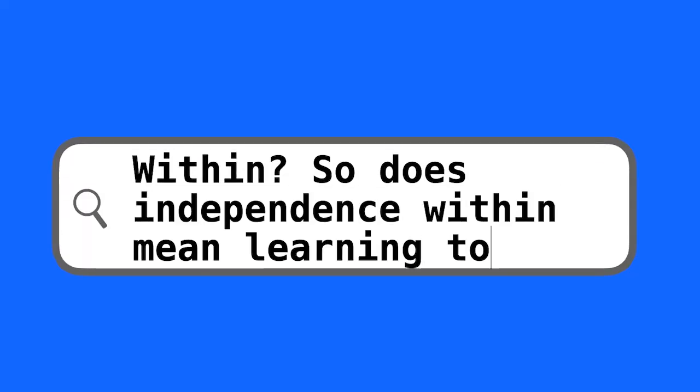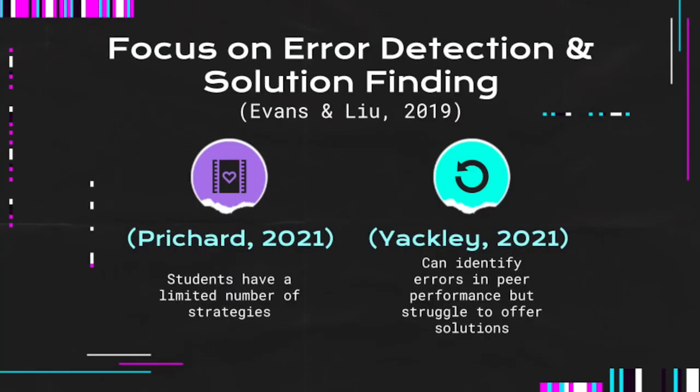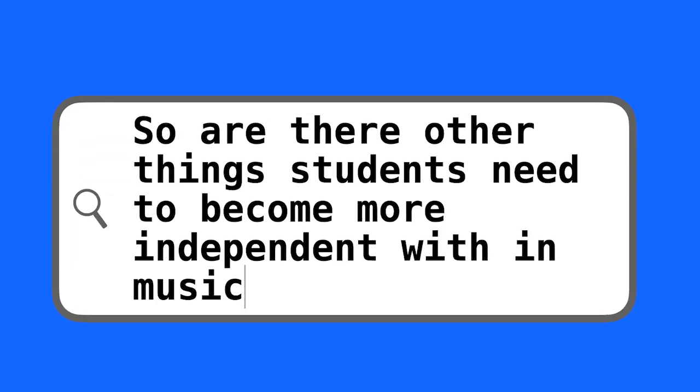Does independence within mean learning to figure out how to practice and improve their parts? That's part of it. There was a large focus in the literature on students' effectiveness with error detection and solution finding. This research showed that students were limited in strategies and could identify errors in peer performances, but often struggled to offer solutions. There were a number of strategies found in the coach category in the literature.